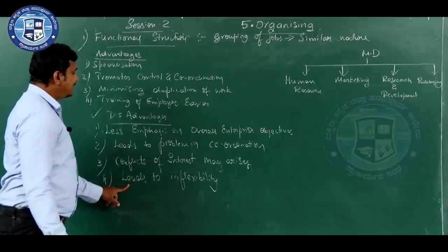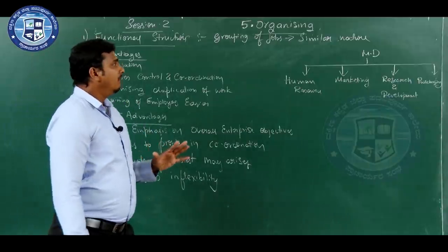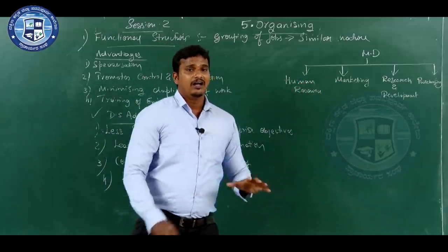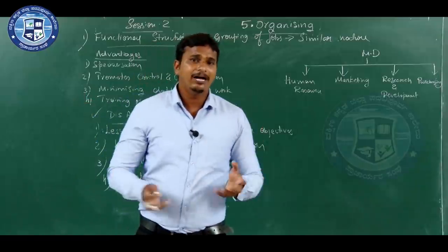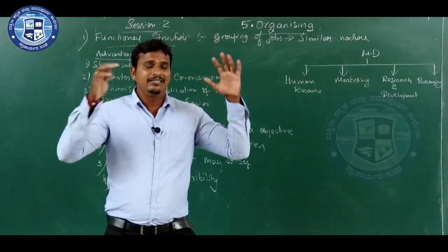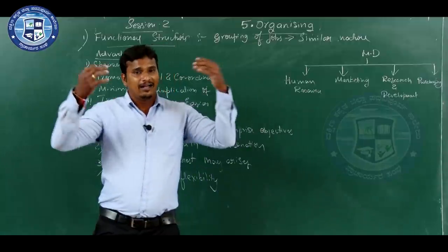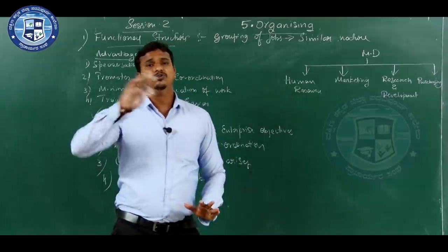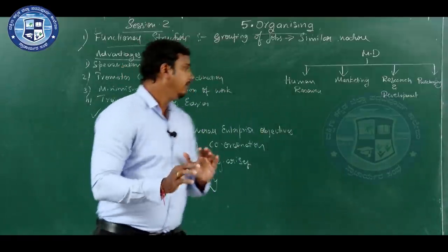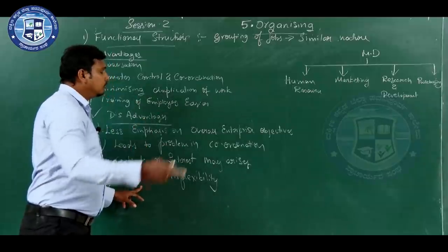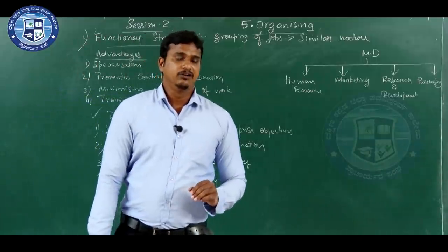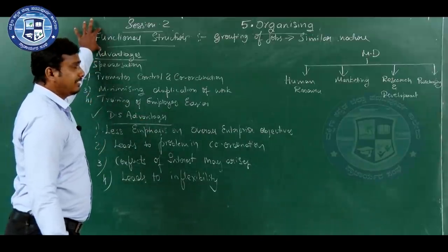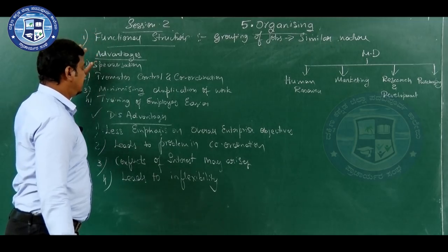The last disadvantage is that it leads to inflexibility. Whenever the company wants to take a decision, the MD has to call all the department heads, they have to sit together and take the decision, and then all decisions have to be transferred down to their departments. It is a huge process and it leads to inflexibility of operations. These are the advantages and disadvantages of the functional structure of an organization.